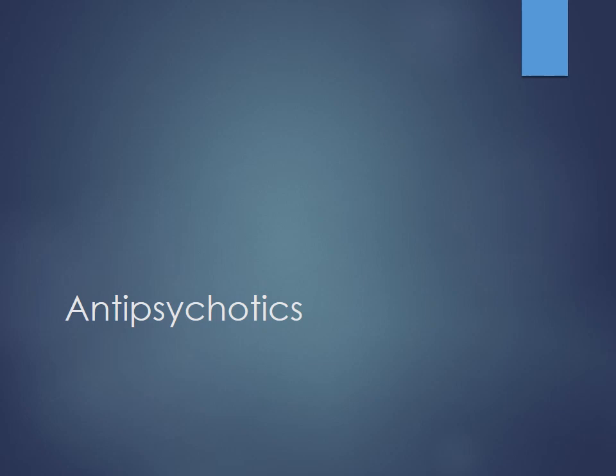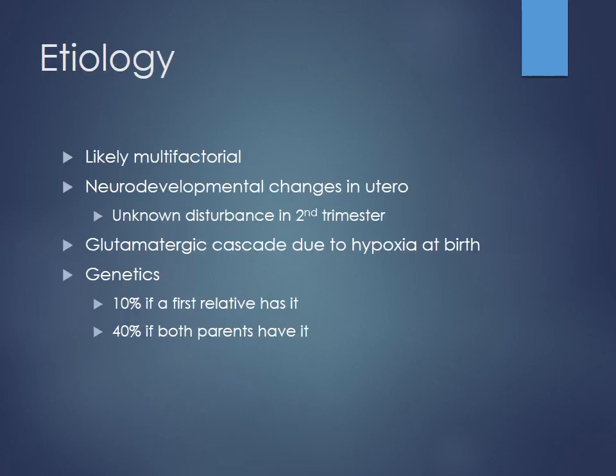We're going to talk about antipsychotics. Why do people develop schizophrenia? Too much dopamine — that's one thought you might have. But we'll see the pathogenesis is going to be a little bit more complicated than that, and that'll be evident when we look at the different types of drugs we're going to use to treat it. You've covered schizophrenia already, correct?